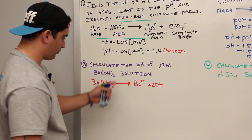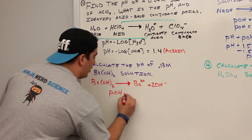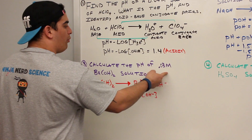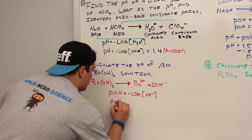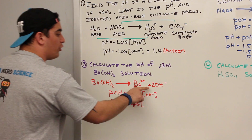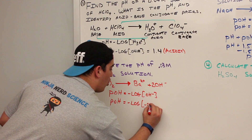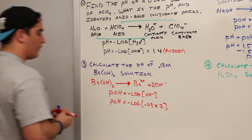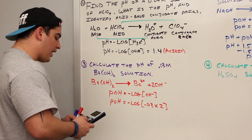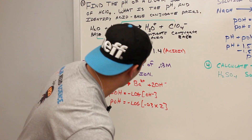It's a strong base, so we use the pOH formula: pOH = −log[OH⁻]. The hydroxide ion concentration appears to be 0.03, but that would be wrong because there are two hydroxides per formula unit. Whenever one barium hydroxide dissociates, it produces two hydroxide ions. So the actual concentration is 0.03 molar × 2. Taking the negative log of that value gives us pOH = 1.22.